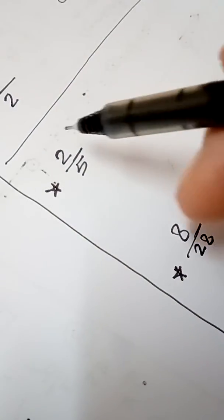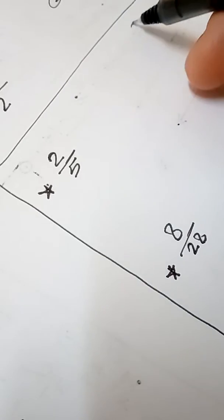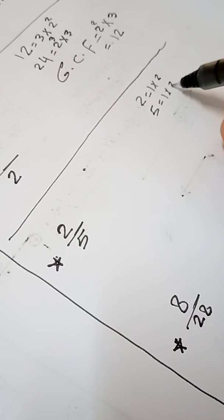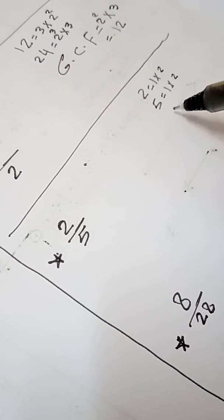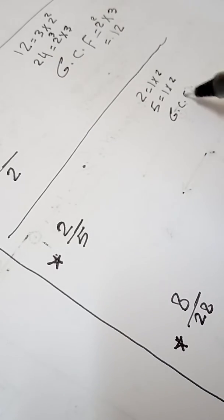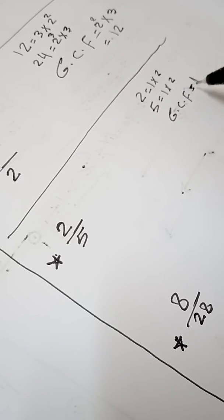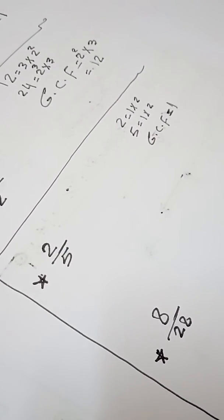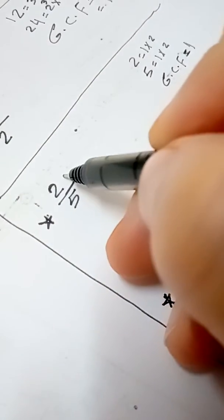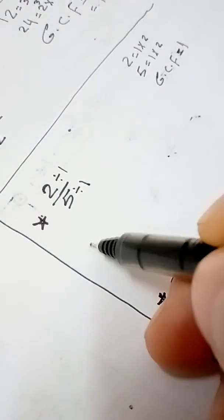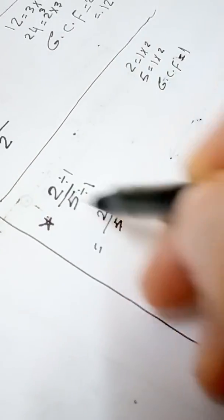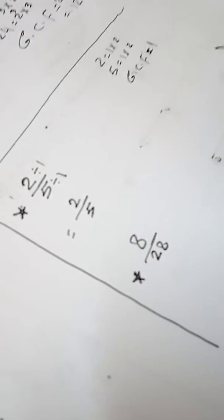Here we have 2 over 5. 2 is a prime number and 5 is a prime number, so there is no GCF — meaning GCF equals 1, because 1 is the GCF for all numbers. If you divide 2 by 1 and 5 by 1, you get the same fraction, so 2 over 5 is already in its simplest form.